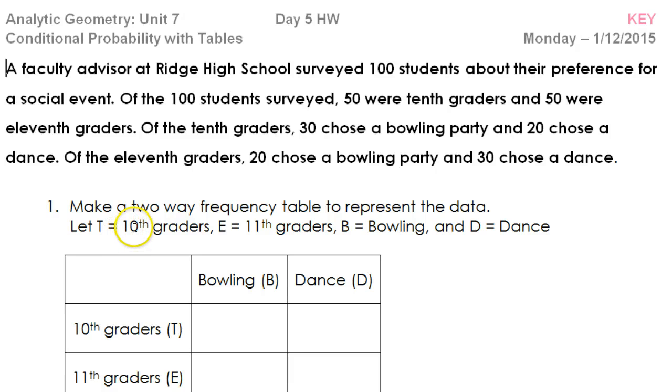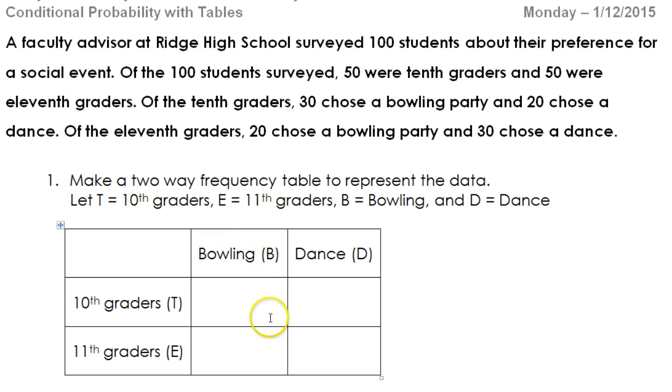Alright, in this lesson we will continue to practice doing conditional probability with tables. Conditional probability is where you're looking for the probability, but first you're given some extra information to narrow down your universe to a smaller set.